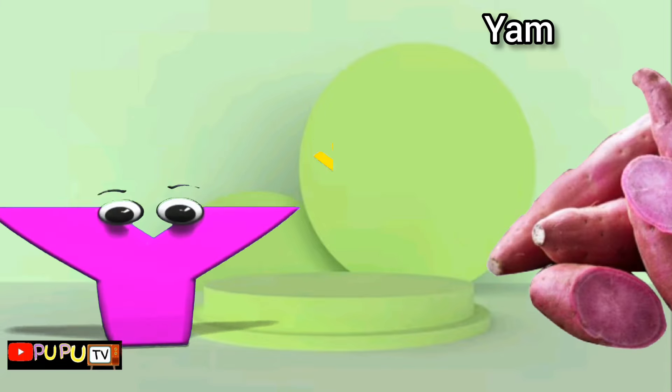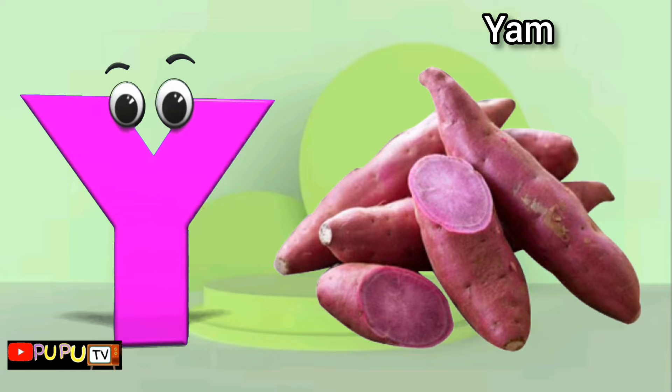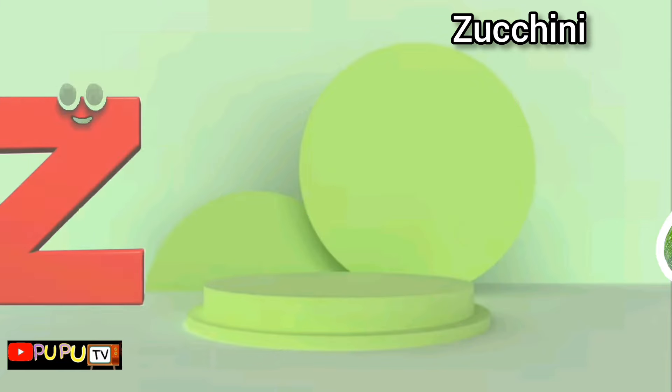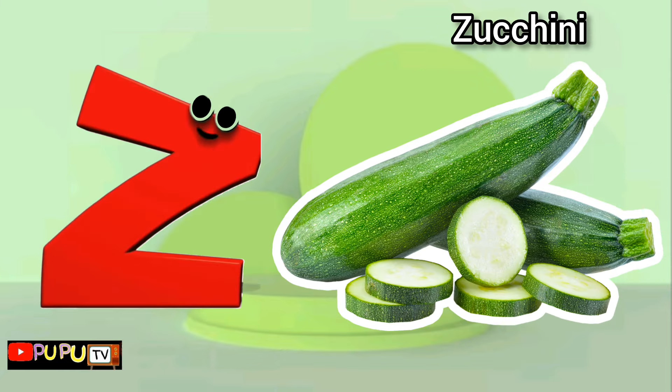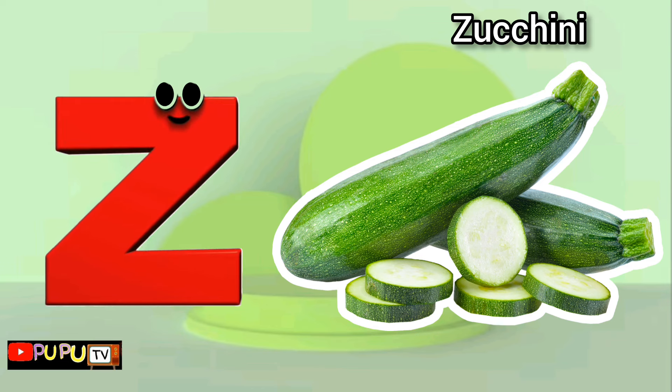Y is for yam, yam. Z is for zucchini, zucchini.